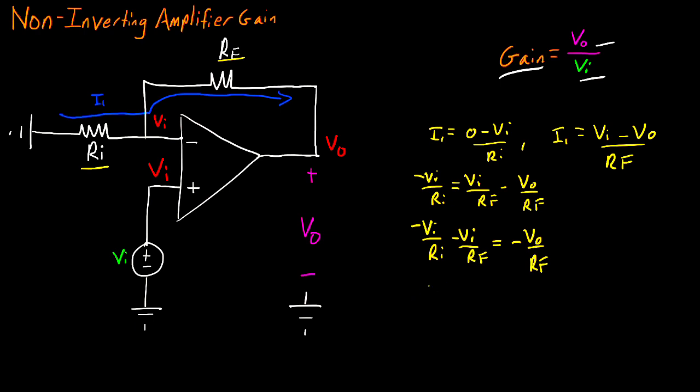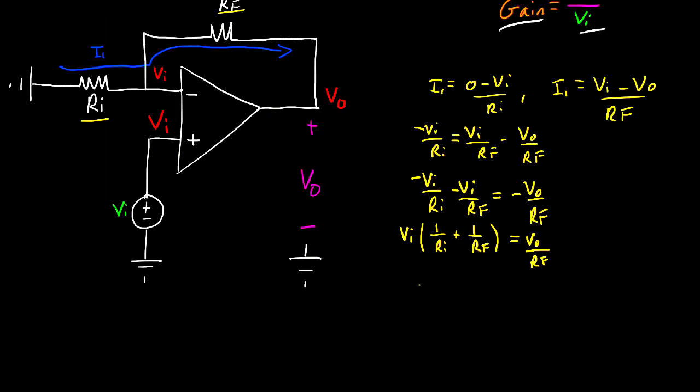And I can factor out my Vi terms and multiply everything by negative. And I'll have Vi, 1 over Ri plus 1 over Rf is equal to Vo divided by Rf. Now to get that ratio of Vo divided by Vi, I'm going to divide both sides by Vi and multiply both sides by Rf. And that is going to give me Rf multiplied by 1 over Ri plus 1 over Rf is equal to Vo divided by Vi.